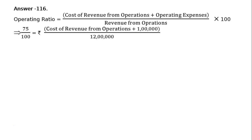Cost of Revenue from Operations plus Operating Expenses — where Operating Expenses is given as ₹1 lakh — all divided by Revenue from Operations, which is ₹12 lakhs. Here we will not multiply by 100 on the right-hand side.